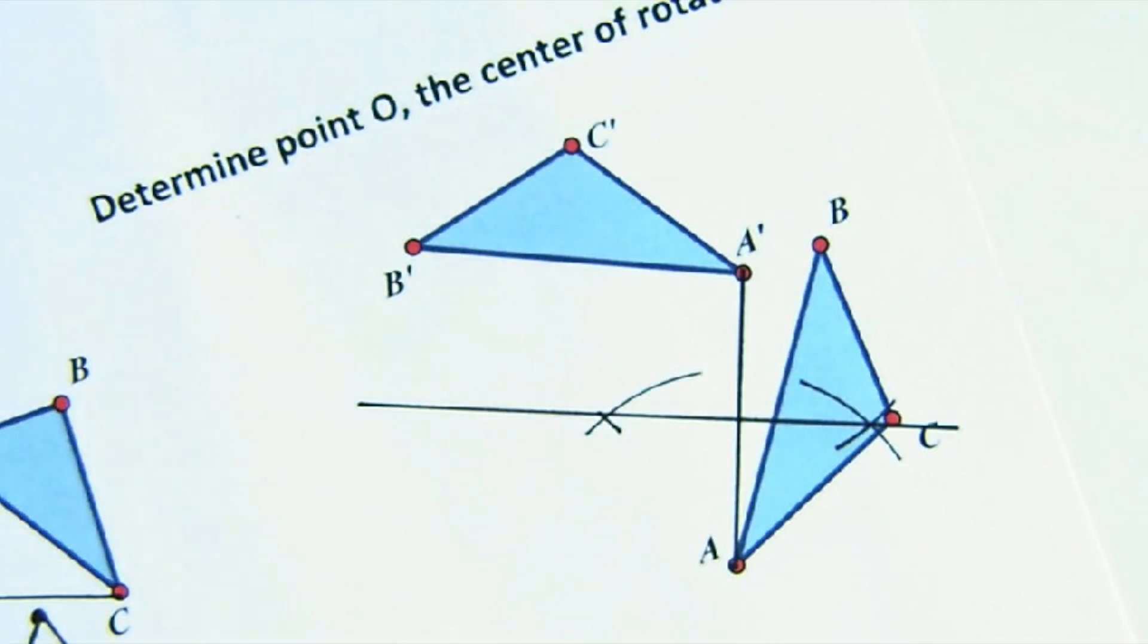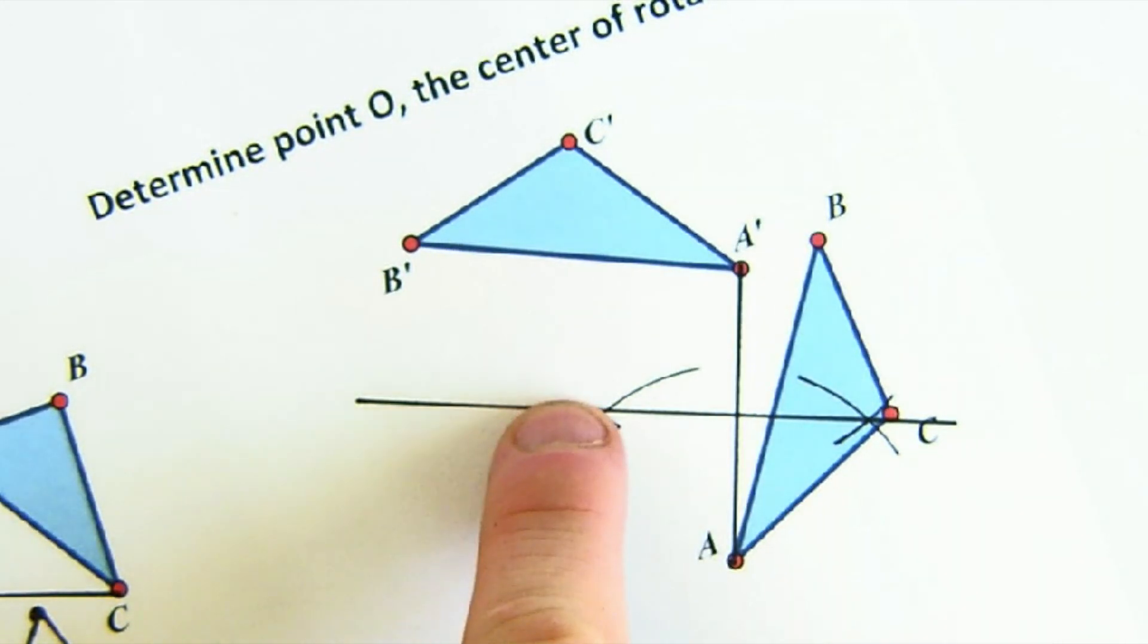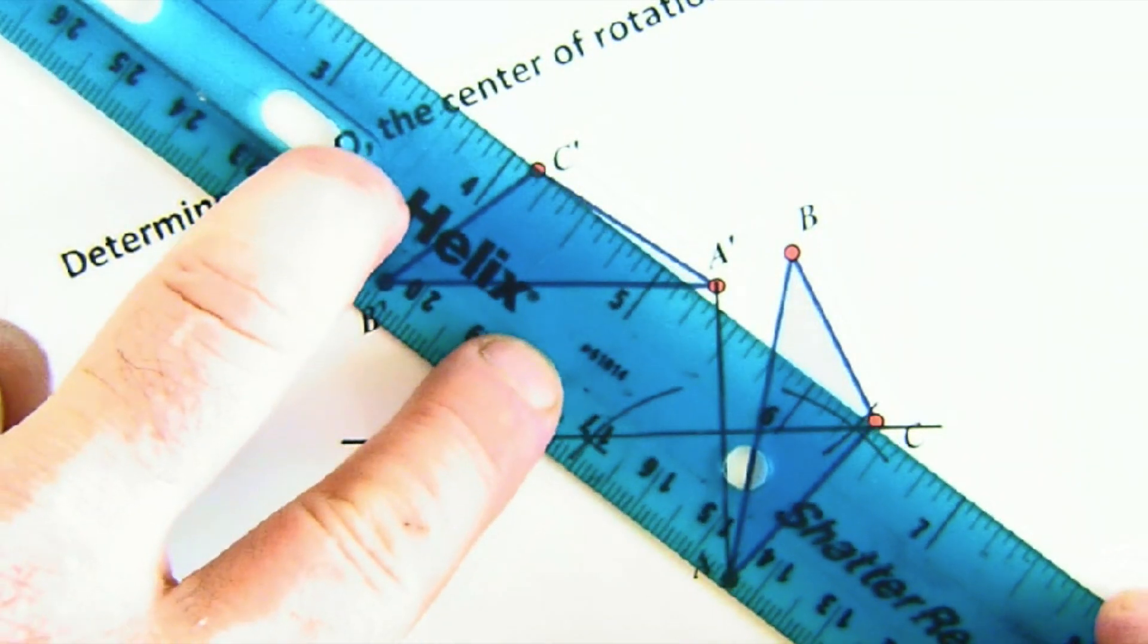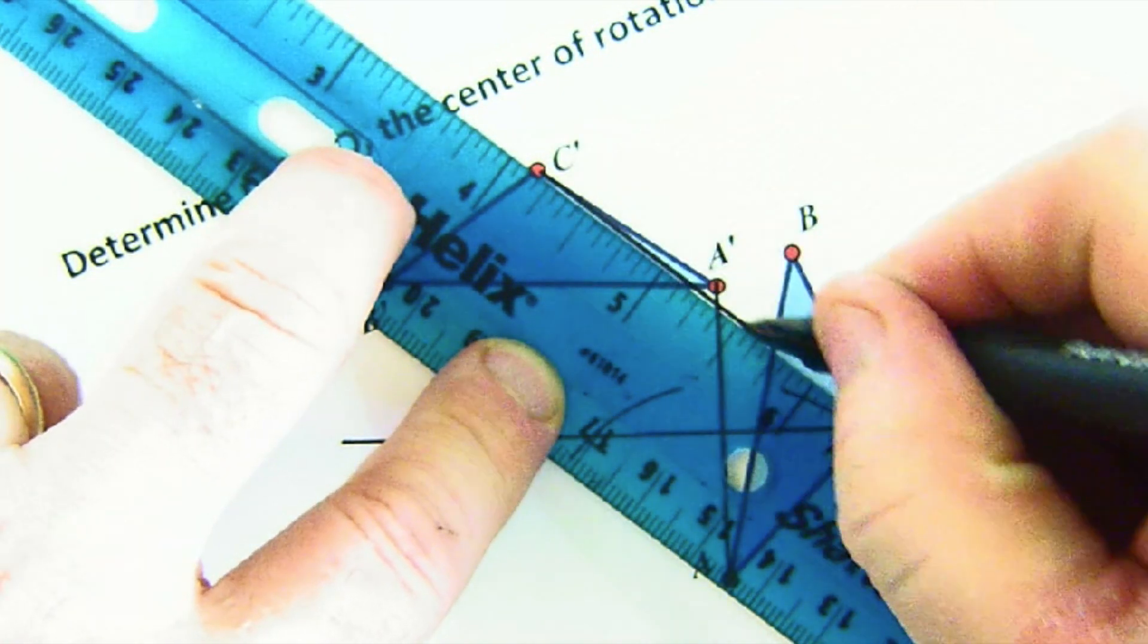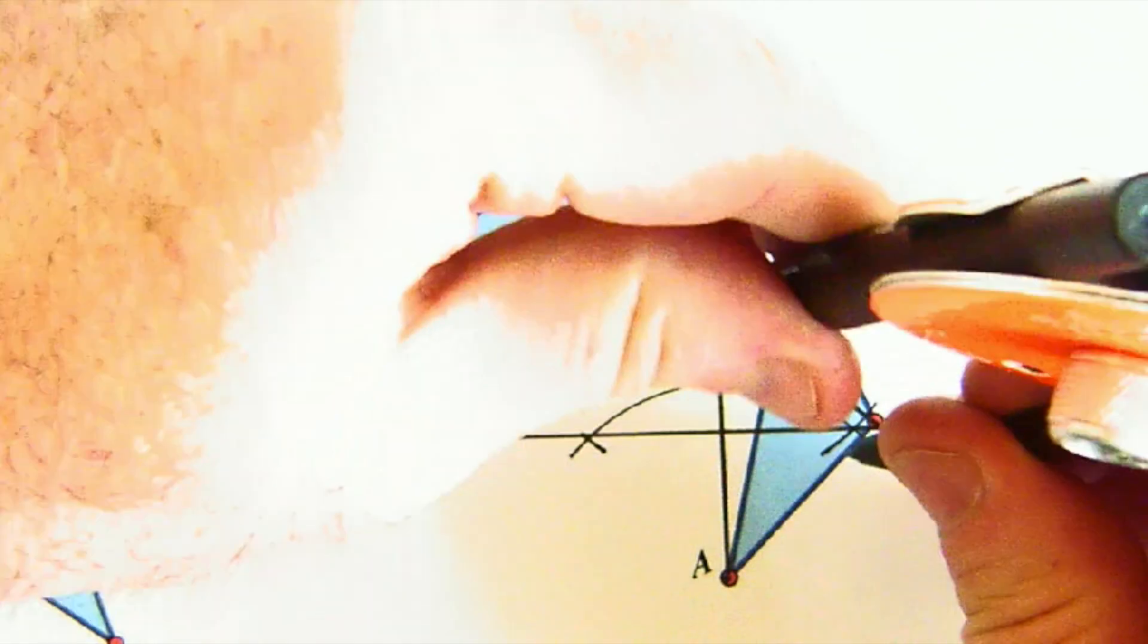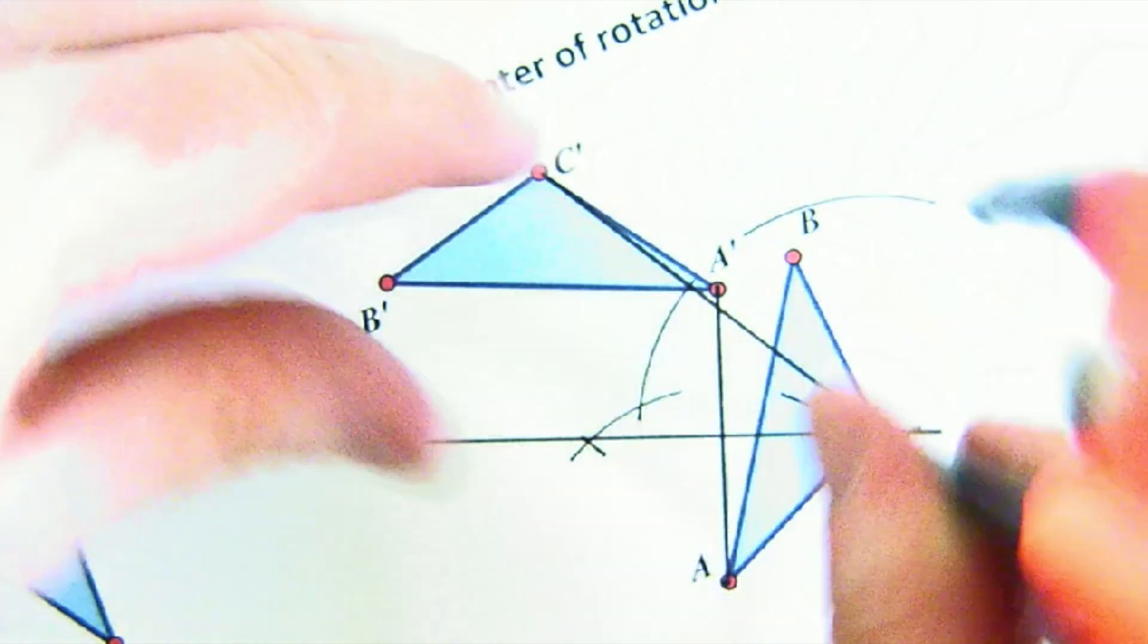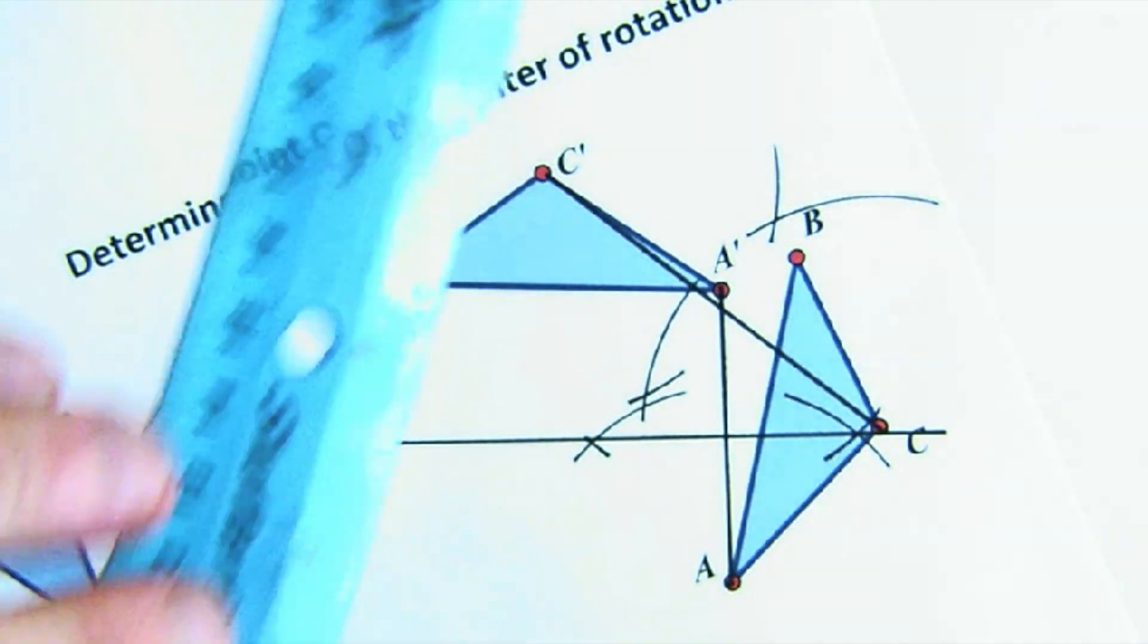But I don't know, like, is the center there to there, but it's got to be the same center that can go through B and B prime and C and C prime. So let's create a second perpendicular bisector. Let's say the one from C to C prime. This would tell us the line that represents all points that are the same distance from C and C prime. So I'm going to do the same construction. I'm going to do the perpendicular bisector here and draw in that line.